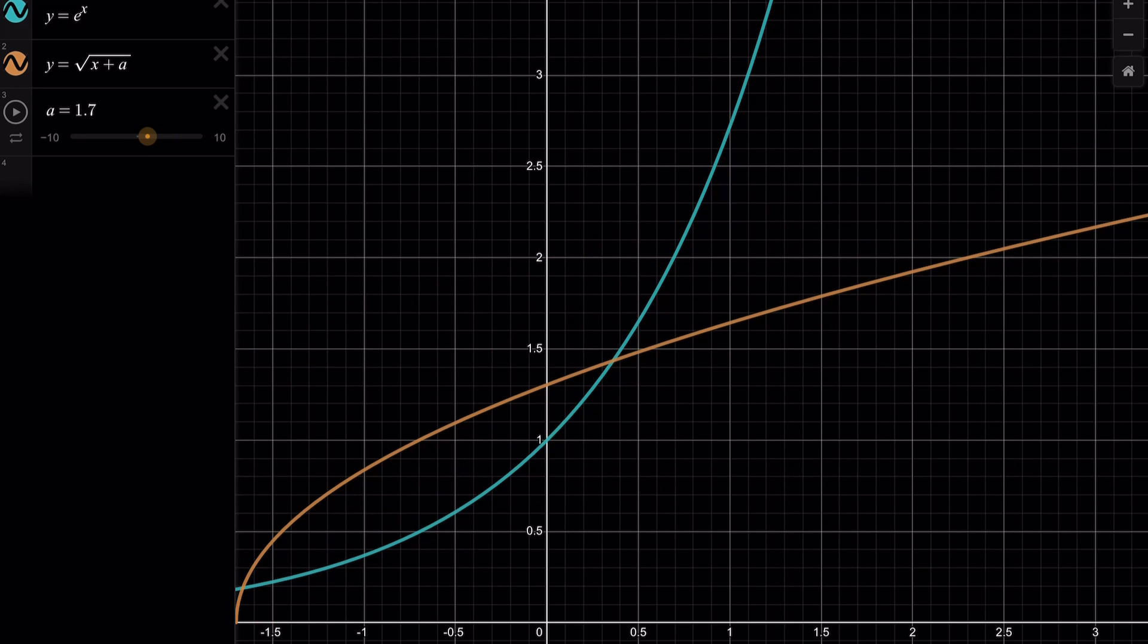And if you kind of do it very carefully, and you can definitely do this in Desmos, as the values get closer to 0.7, you're going to see that the graphs are pretty close. And at one point, they're going to be tangent. So that's going to be our starting point. So let's go back to the problem and explore a little further using a little bit of calculus.